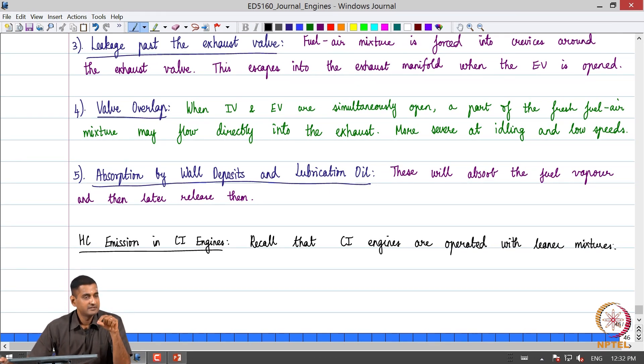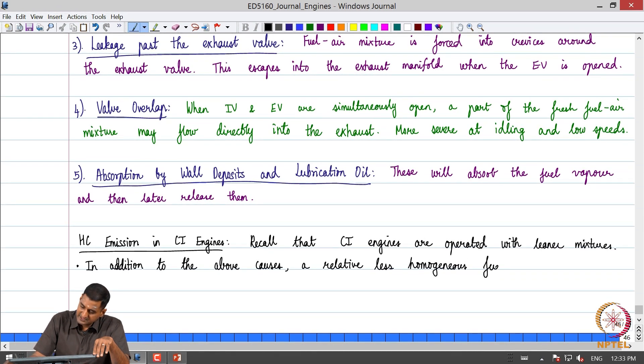The hydrocarbon emissions become lower because they are operated with lean mixtures. In addition to the factors that we have discussed for SI engines carrying over to CI engines also, a relatively less homogeneous fuel-air mixture would contribute to higher hydrocarbon emissions because we do not burn the fuel properly.